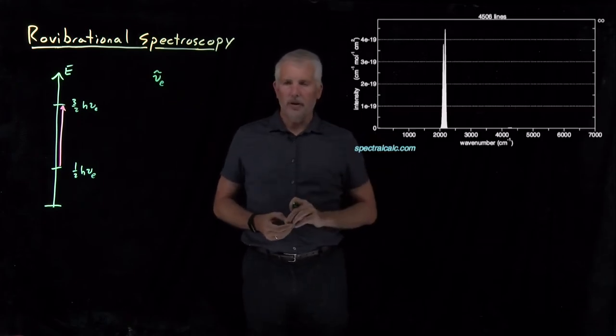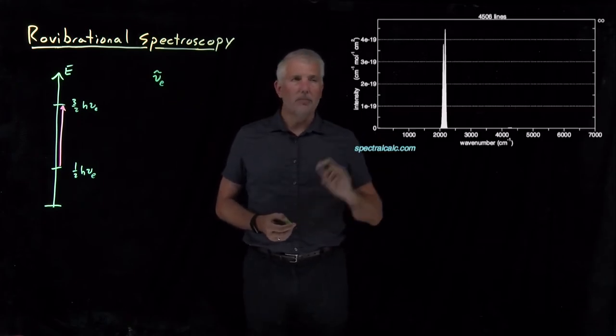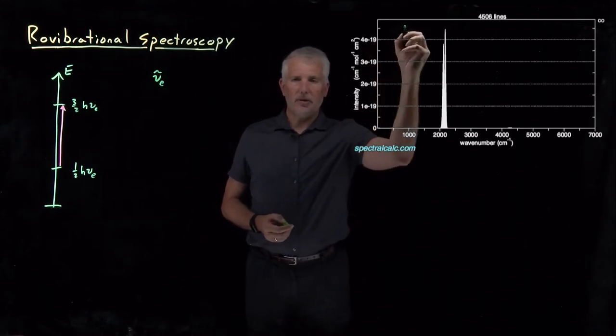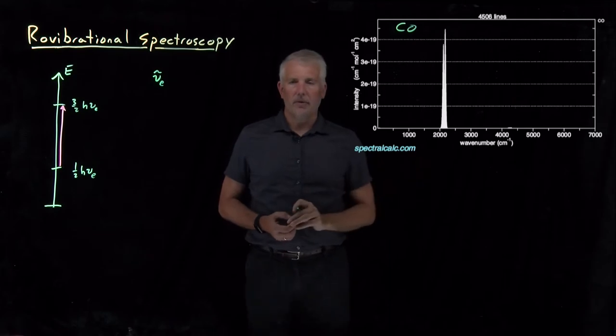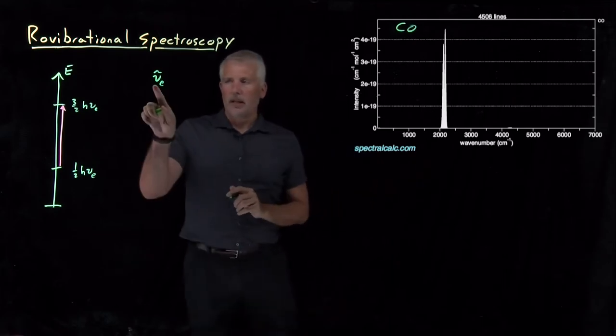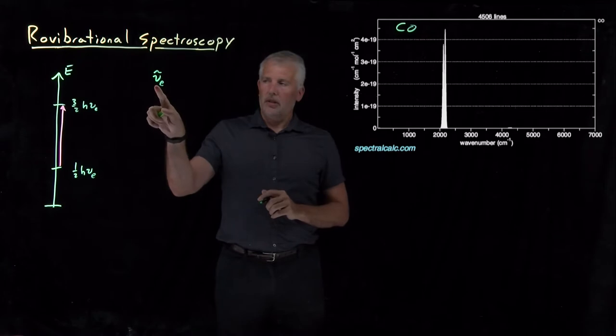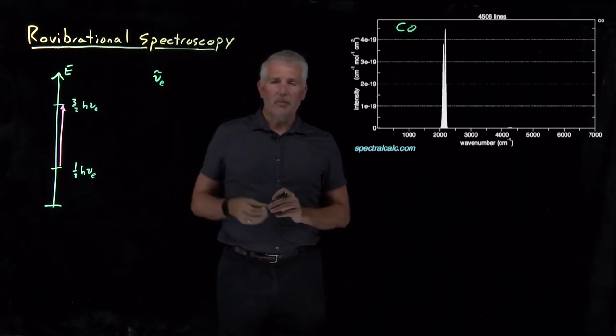So if we pull up a graph of what frequencies of light are actually absorbed by the carbon monoxide molecule, here's a spectrum of the infrared light that's absorbed by carbon monoxide. The actual fundamental vibrational frequency for carbon monoxide is about 2170 wave numbers.